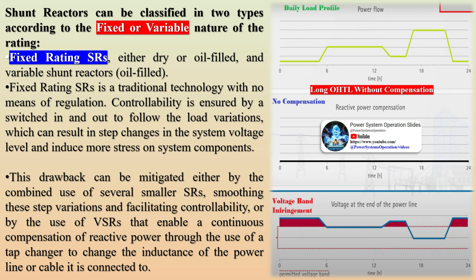This drawback can be mitigated either by the combined use of several smaller SRs, smoothing these step variations and facilitating controllability, or by the use of VSRs that enable continuous compensation of reactive power through the use of a tap changer to change the inductance of the power line or cable.